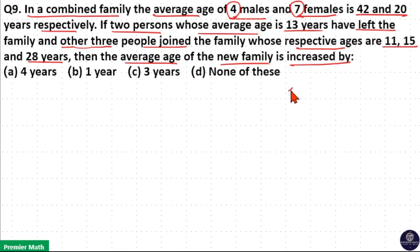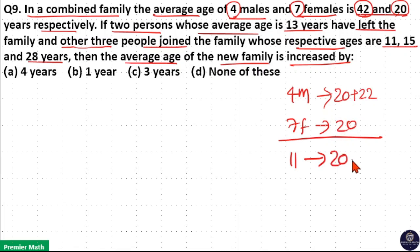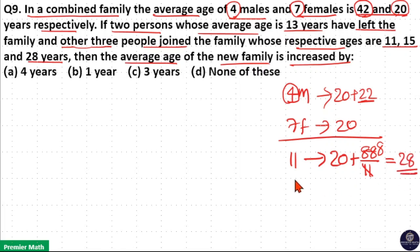Initially there were 4 males and 7 females, that is total 11 people. For 4 males, 42 is the average age. For 7 females, 20 is the average age. To find the average age of these 11 people, I will take the common average. I will write 42 as 20 plus 22. Since 20 is common, I take 20 plus remaining 22. This 22 is for these 4 people, so 22 into 4 is 88. This 88 should be distributed to 11 people, so 88 divided by 11 equals 8. So 20 plus 8.